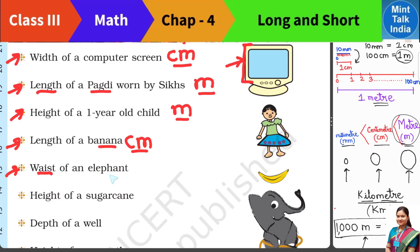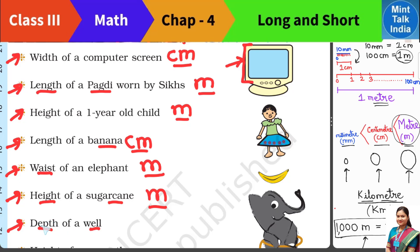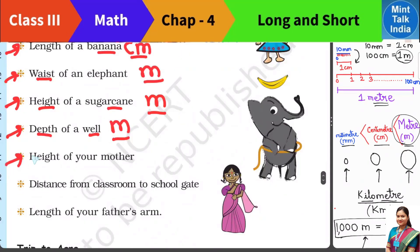Then the waist of an elephant. Waist means going around an elephant — because it is a round shape, we would use a thread or string. It is a big measurement so we will measure it in meters. Then the height of a sugar cane — sugar cane is long and tall — so we will measure it in meters. Then the depth of a well: a well is a hole and depth means how low it goes. We cannot use a scale for that, so we measure it in meters.